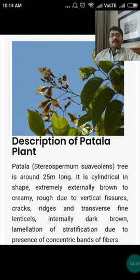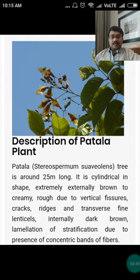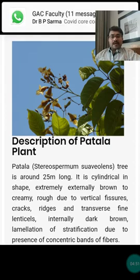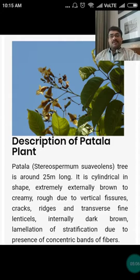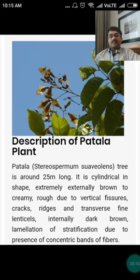Description of the Patla plant: Stereospermum suaveolens is a tree around 25 meters tall, cylindrical in shape, externally brown to creamy and rough due to vertical fissures, cracks, ridges, and transverse fine lenticels. Internally it is dirt brown, with lamination or stratification due to the presence of concentric bands of fibers.